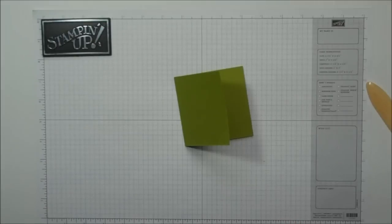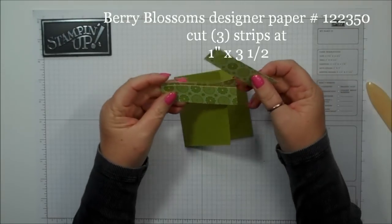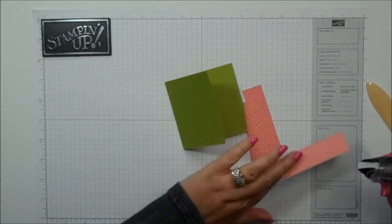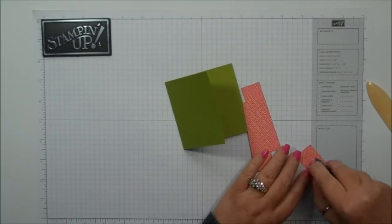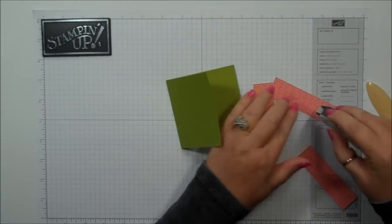Okay, so we're going to use the Berry Blossoms Designer Paper and I cut 3 strips at 1 inch by 3 1/2 and I'm just going to go ahead and apply these to the layers of the card.